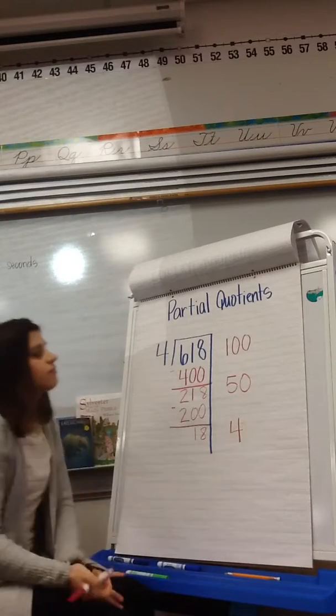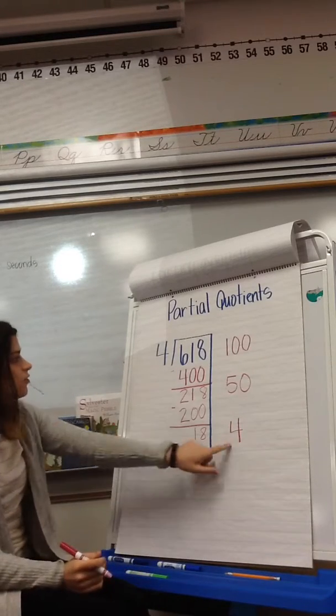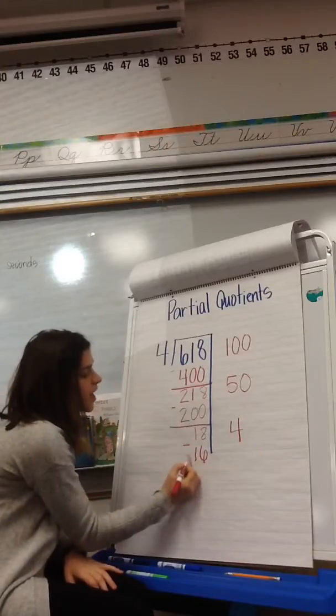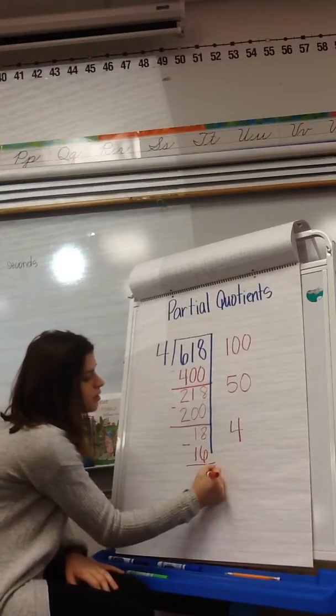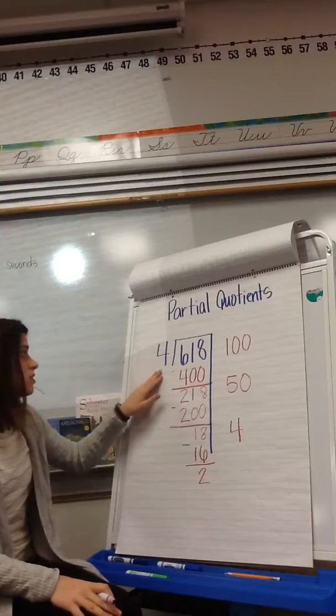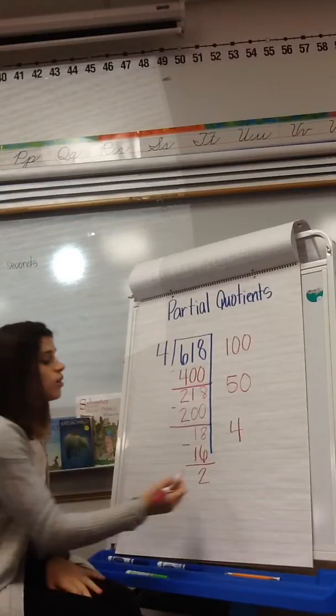4. I guessed. Now I'll check. 4 times 4 is 16. Subtract. 2. 2 is not big enough to divide into 4 groups, so I know that's my remainder.